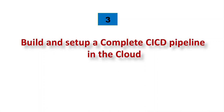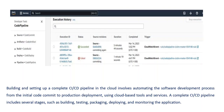Number three is build and set up a complete CI/CD pipeline in the cloud. This project is actually a great addition to your portfolio — imagine building a complete CI/CD pipeline in AWS from scratch to finish. I highly recommend this. Building and setting up a complete CI/CD pipeline involves automating the software development process from the initial code commit to production deployment using cloud-based tools and services. A complete CI/CD pipeline includes several stages such as building, testing, packaging, deploying, and monitoring the application.